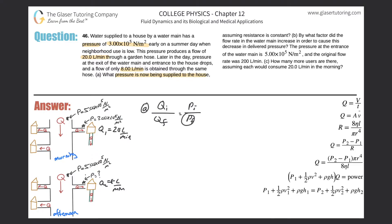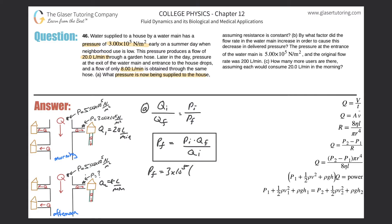Solving for P_final: P_f equals P_i times q_f divided by q_i. We have everything we need — the initial pressure at the house was 3 times 10 to the 5, the final flow rate was 8 liters per minute, and the initial flow rate was 20 liters per minute. Since we're creating a proportion, the q units cancel, leaving units of pressure in newtons per square meter, also known as pascals.